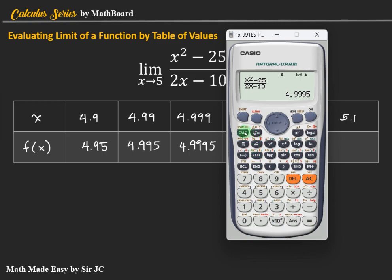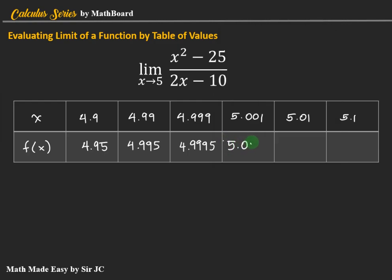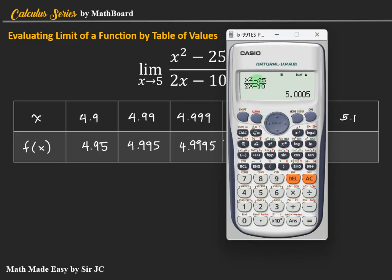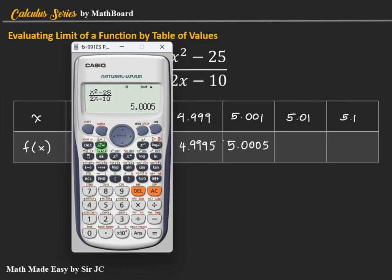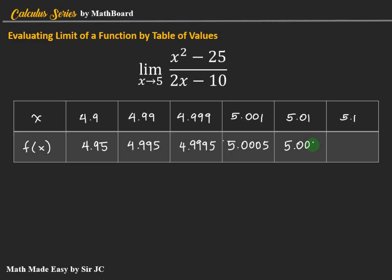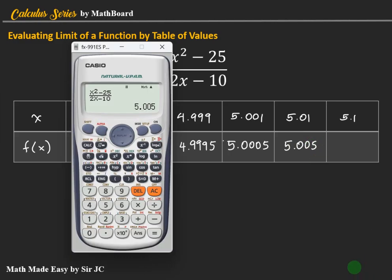Then for 5.001, the result is 5.0005. Then for 5.01, so we have 5.01, the result is 5.005. Then for 5.1, the result is 5.05.